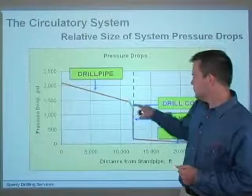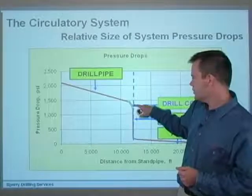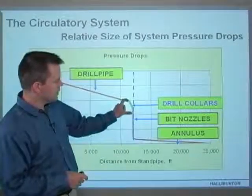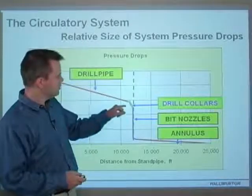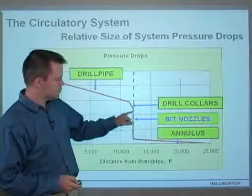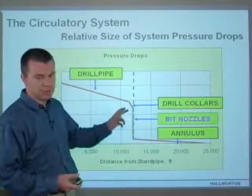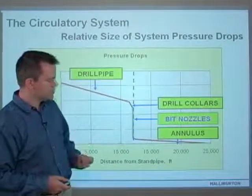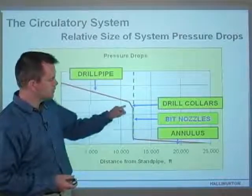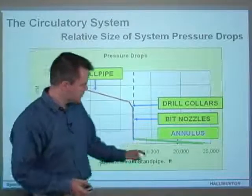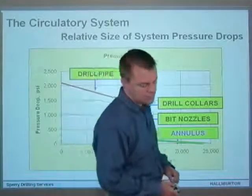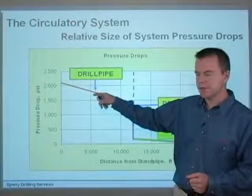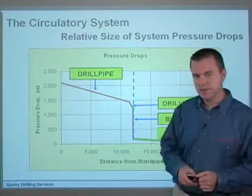Next, we've got the drill collars, with a pressure drop of another couple of hundred psi — nothing major. There might be MWD tools or motors in there, which would perhaps make that pressure drop a little bit larger. The main contributors are the drill pipe and the pressure drop through the bit nozzles, which will vary depending on nozzle size. The drill pipe and the bit nozzles are likely to be your two highest pressure drops in the entire system. The drill collars and the annulus are only a couple of hundred psi in comparison.